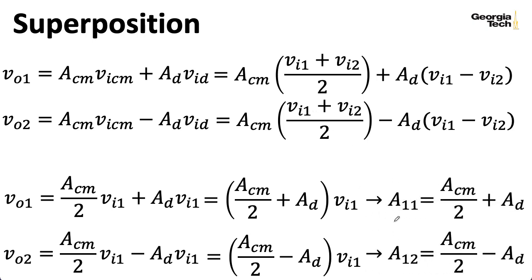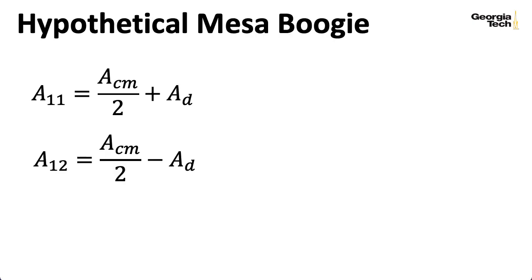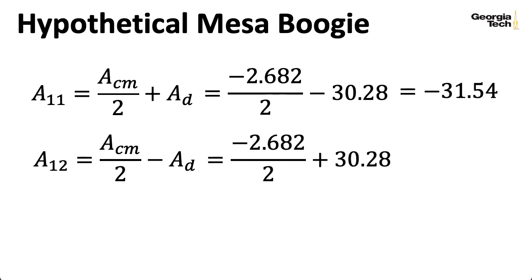So now if I simplify the expression accordingly, getting rid of VI2, I can factor out this VI1. And now I can see what the gains are in terms of the original inputs and our outputs. I can say that the gain going from input one to output one is the common mode gain divided by two plus the differential mode gain. And the gain going to the output on the right is the same thing, except now I subtract the differential mode gain.